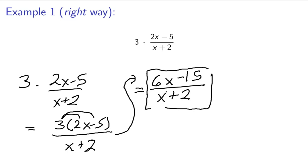So 6x minus 15 over x plus 2. The constant only goes to the top, not the top and the bottom.